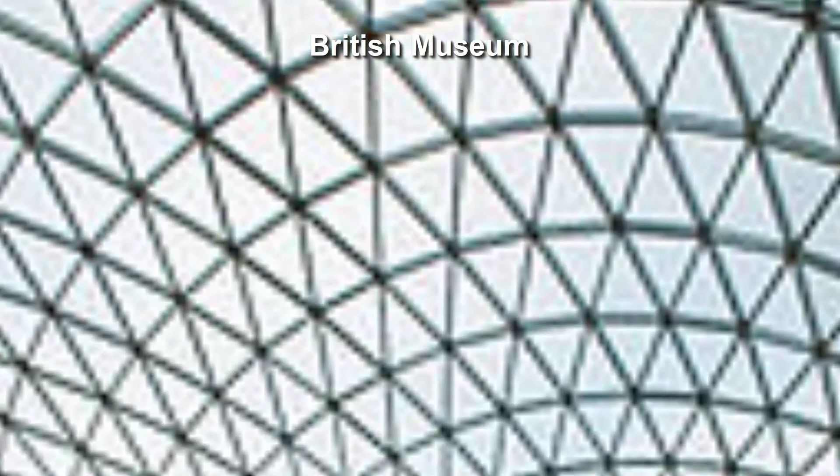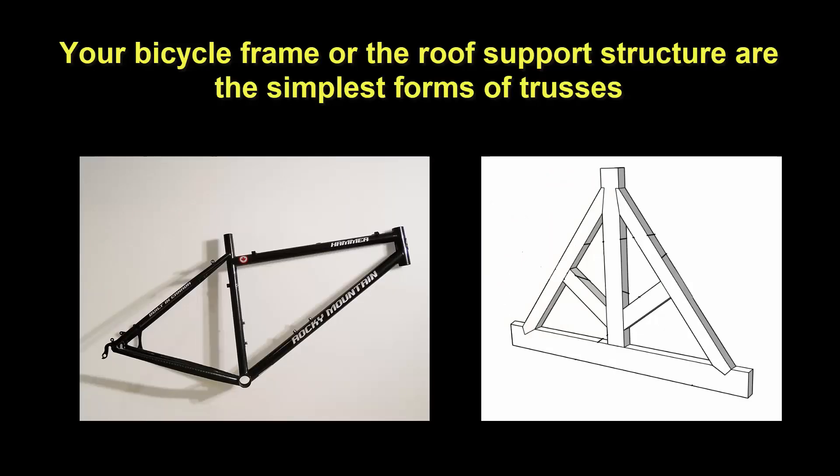We find particular way the structures are made in which straight links are connected to make truss. A truss consists of many straight links joined together to make many triangles. Your bicycle frame or the roof support structure are the simplest forms of trusses.